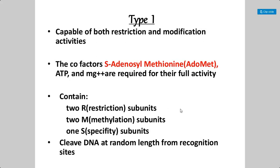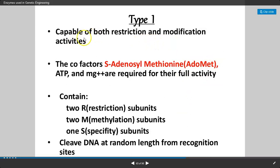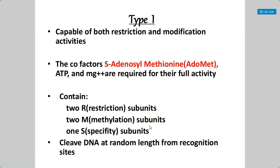The first type is Type 1 Restriction Enzymes, or Type 1 molecular scissors. These Type 1 restriction enzymes are capable of both restriction as well as modification activities — they can limit or modify sequences. The cofactors required for these enzymes are S-Adenosyl Methionine (SAM), ATP, and Mg2+ ions, which are required for the full activity of Type 1 restriction endonucleases. These consist of 2 restriction subunits, 2 methylation subunits, and 1 specificity subunit. These enzymes cleave the DNA molecule at a random length from the recognition site.